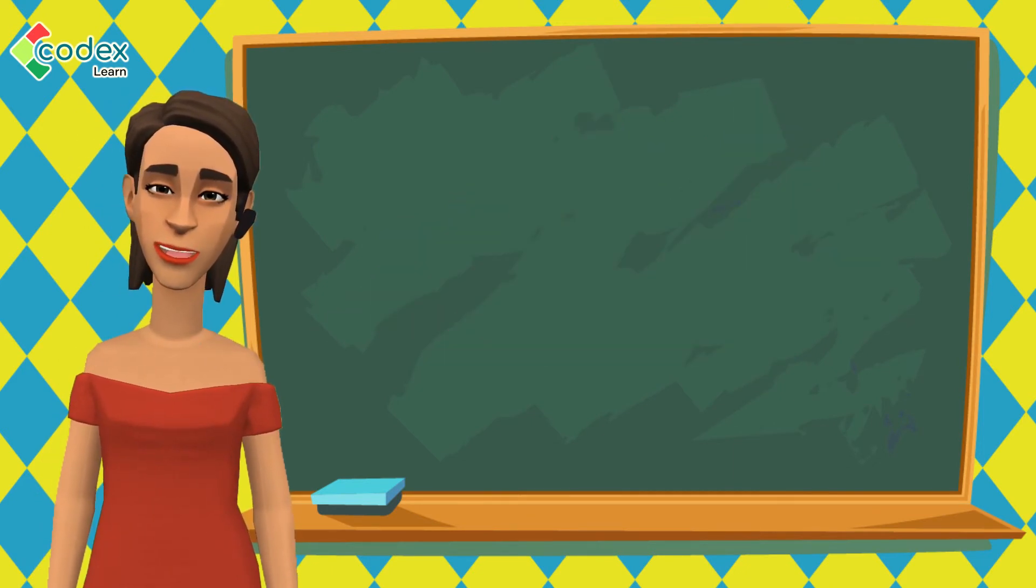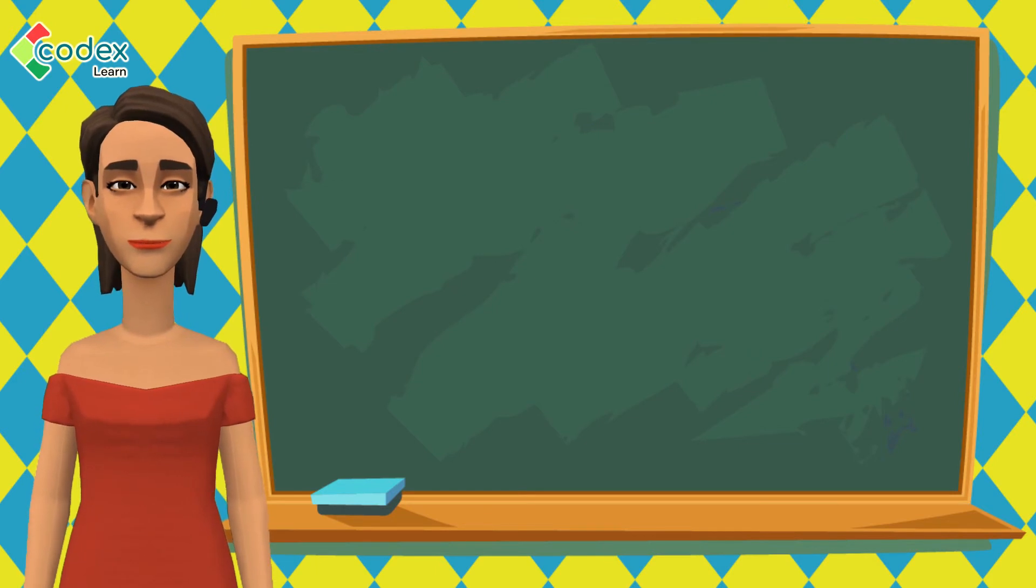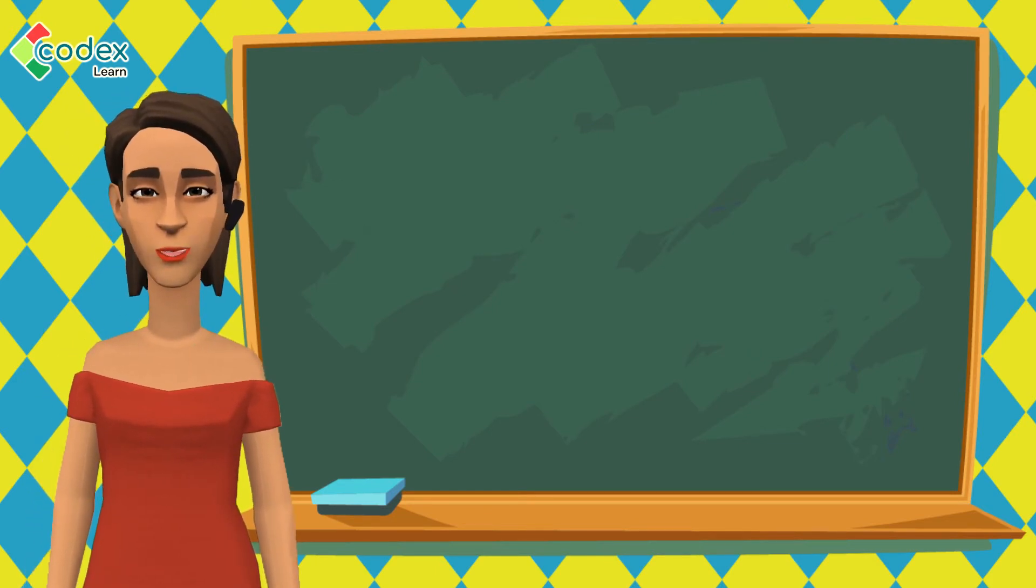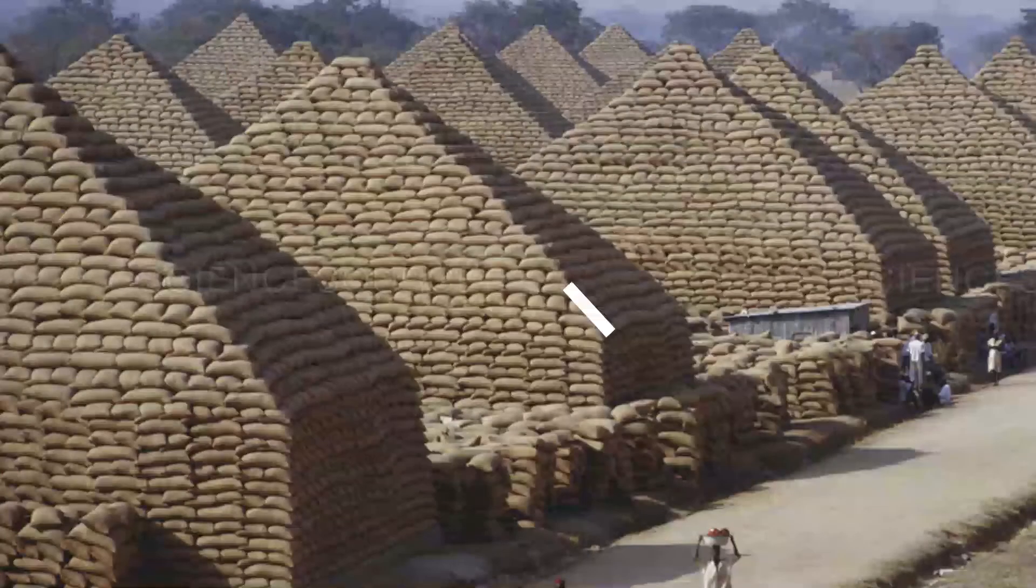Have you heard about the famous groundnut pyramid in Kano? Here is a fun fact. The groundnut pyramid also has the shape of a triangle. Here is what the groundnut pyramid of Kano looks like.